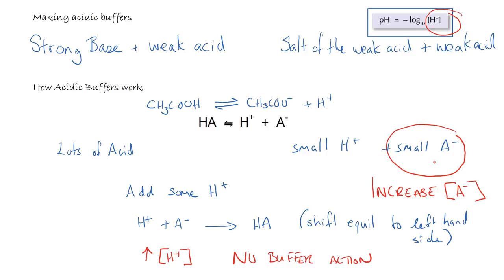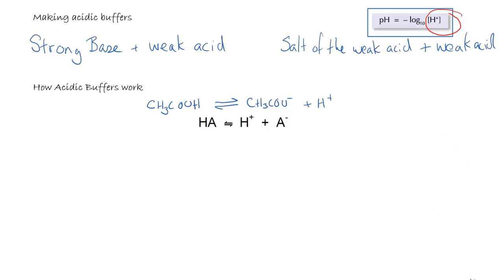What we are going to look at now is what happens when we have made the buffer solution. A buffer solution means we have got large amounts of the acid and also lots of A⁻, because we have reacted the salt of the weak acid with the weak acid, or the strong base with the weak acid, and we have got a small amount of H⁺ which is making it acidic.